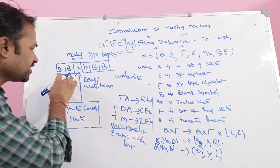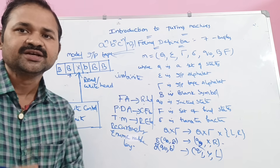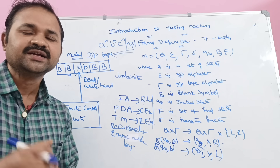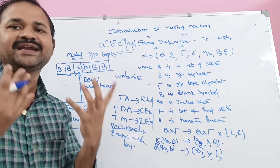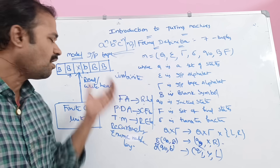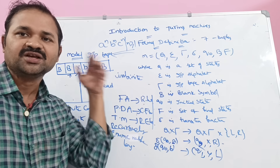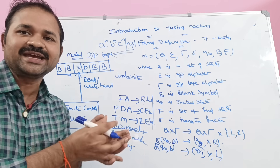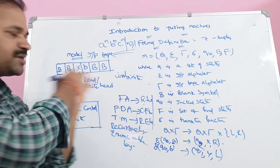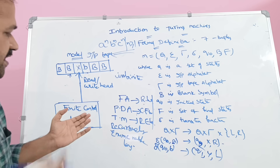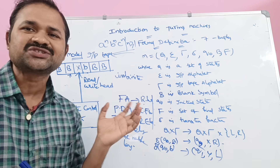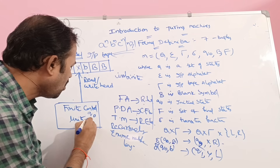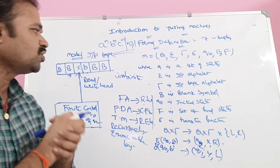If we move the head towards the left, the read/write head moves to the previous position. So the read/write head is useful for reading one symbol at a time, writing or changing the content of a cell, and then moving either left or right. The finite control unit contains all the states present in the machine — for example, five states would all be present in the finite control unit.